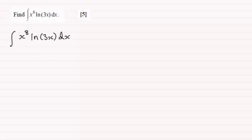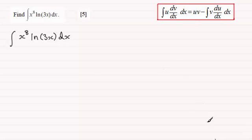Now to do something like this requires integration by parts. I'm assuming that you're familiar with the formula. If not, here it is. But when you're working with natural logs, always make the log function your u. So this will be u, and that means x to the power 8 is the dv by dx.